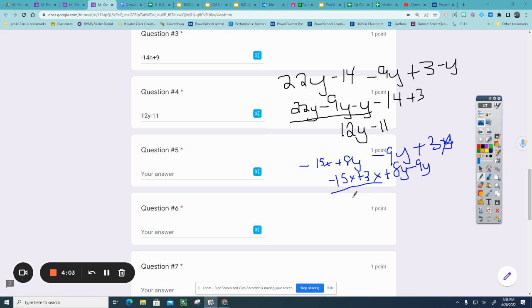And positive 8 minus 9 will be negative 1y. You can also write that as negative 12x minus y. I'm going to choose to type it the way most mathematicians do, and that will be negative 12x minus y.